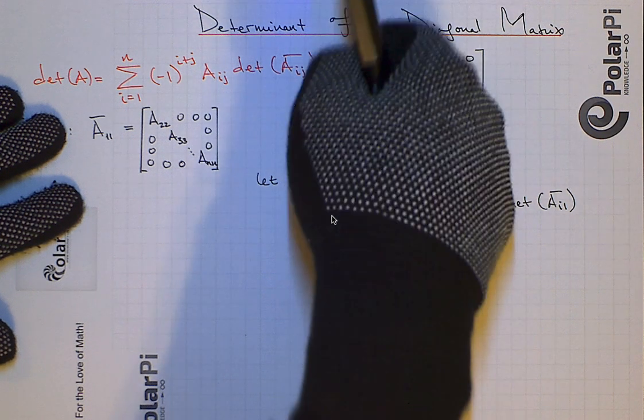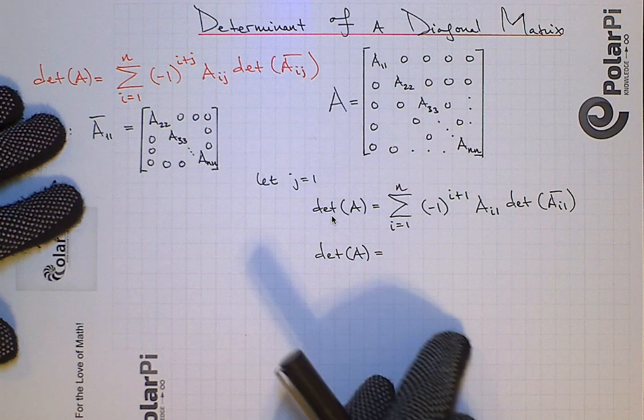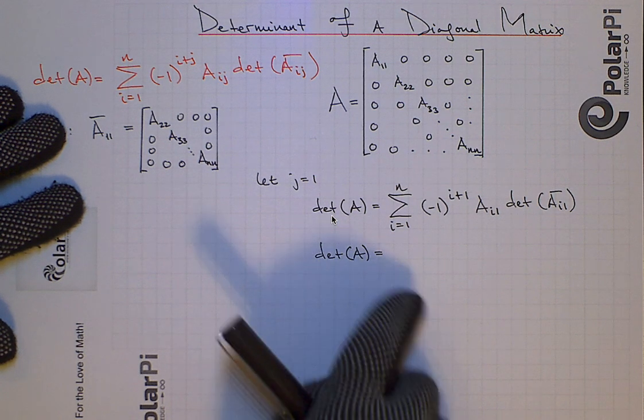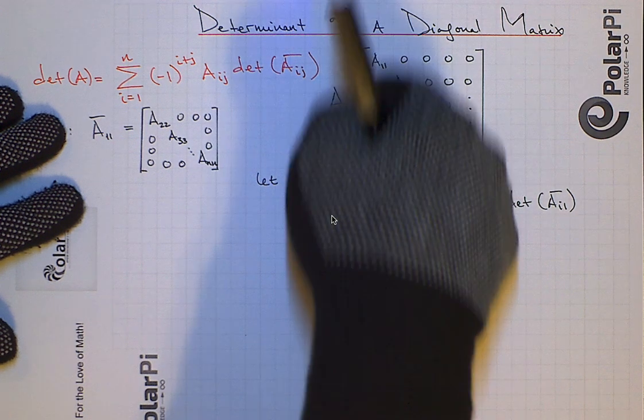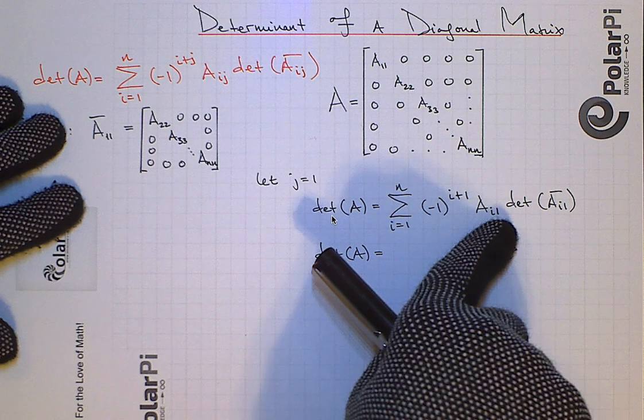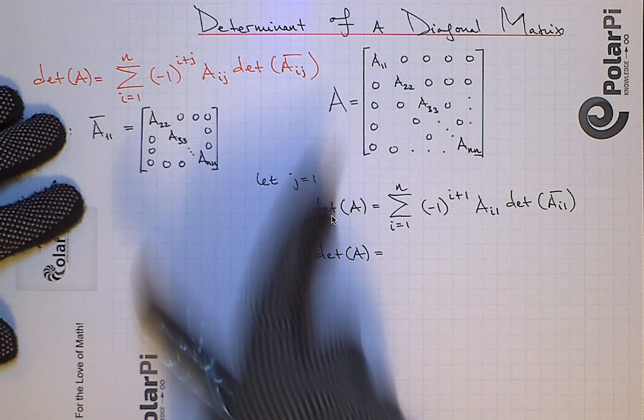So basically, I'll go through these numbers down here. Now, notice that then, except for when i equals one, so except for A11, all of these guys are zero. In other words, the Ai1s here are all zero except for A11.